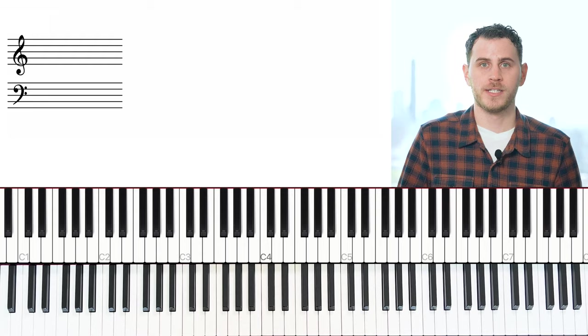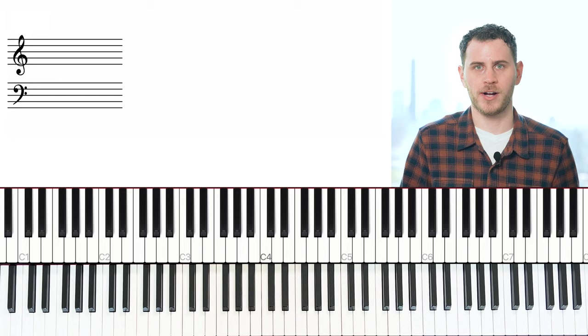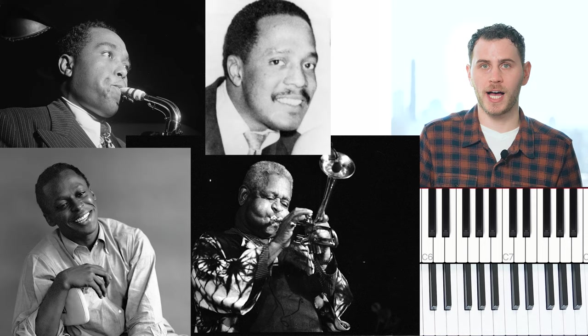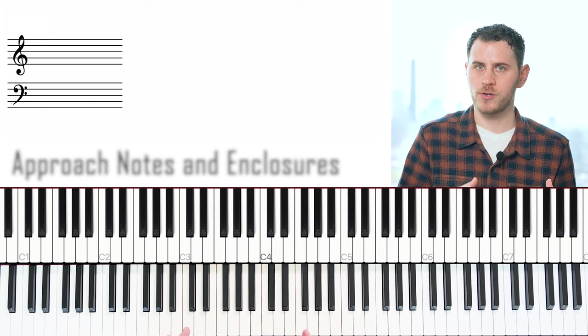So style number one is going to be bebop. This is now considered really in many ways to be the centerpiece of jazz vocabulary. Players like Charlie Parker, Dizzy Gillespie, Bud Powell, even Miles Davis brought a lot of chromaticism into their lines, but they did it in a really melodic way. Now this may be a review for some of you, but two of the really important pieces of a bebop line are approach notes and enclosures. So at the end of the day, this is all built around chord tones.